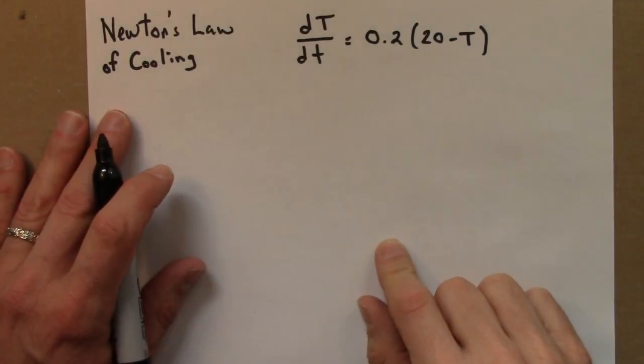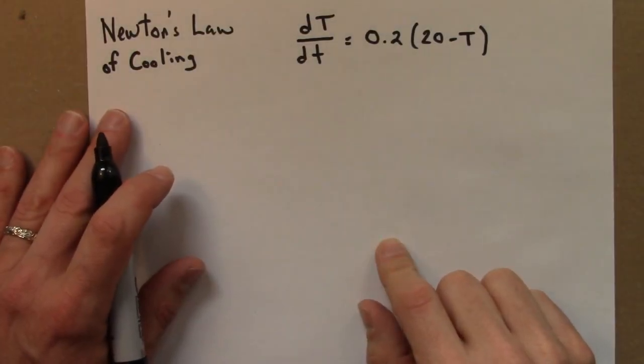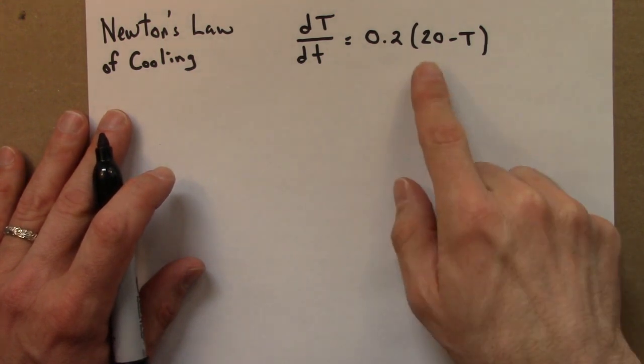Here's a version of Newton's law of cooling that could apply to an object that is in a room with a temperature of 20.